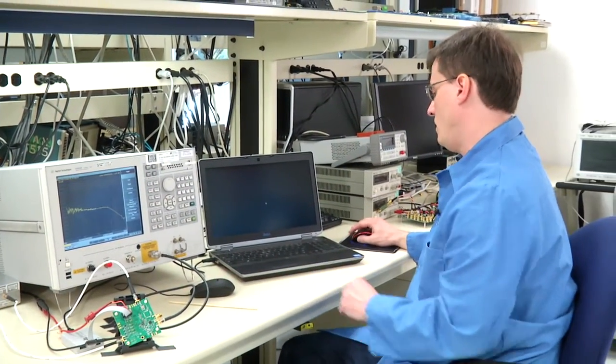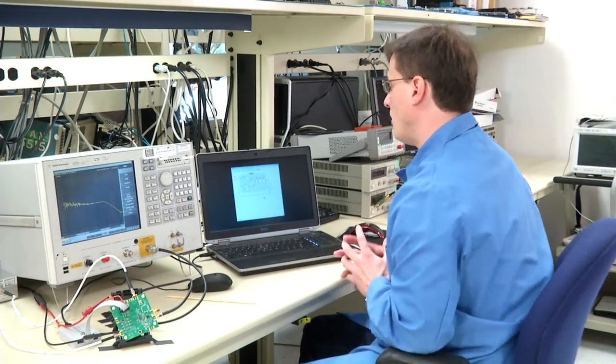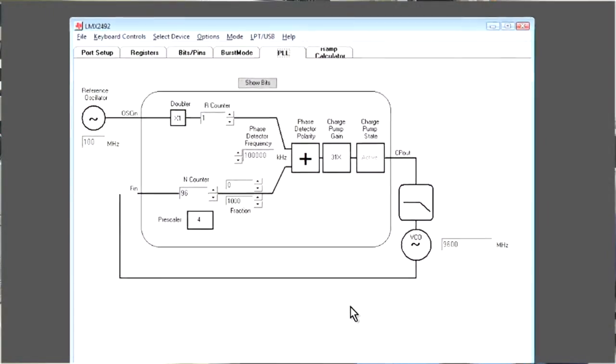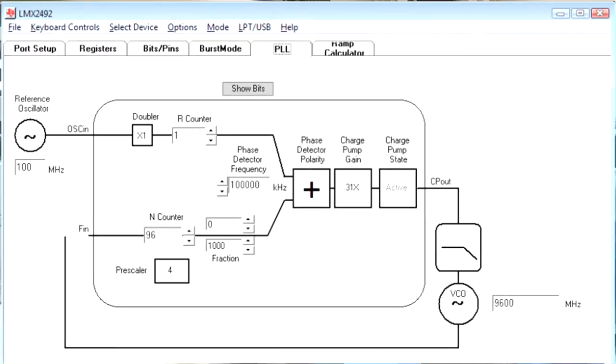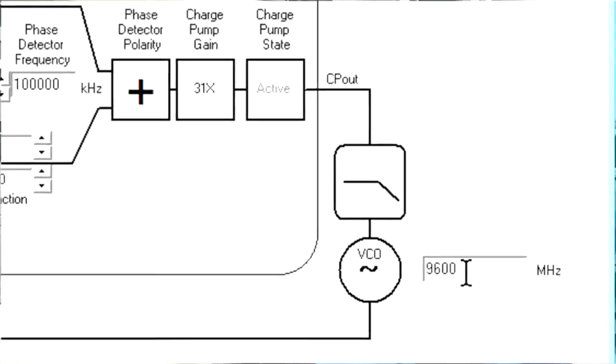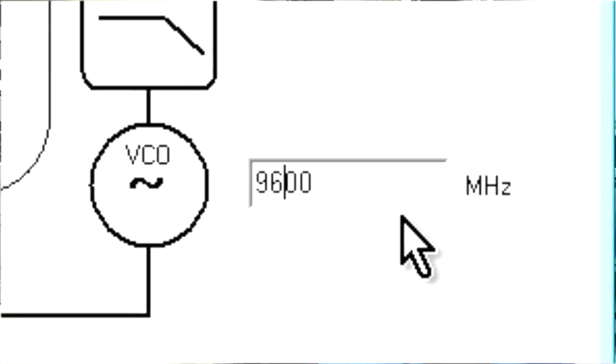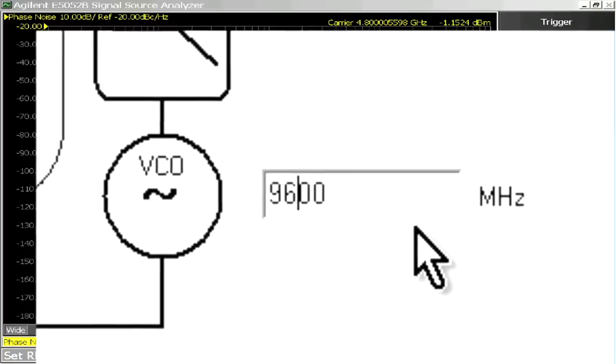Let's move to the software that is controlling the part through the serial interface. The software is called CodeLoader and is currently operating the part. The specified operating frequency is 9.6 GHz, but we can change that as well as all the other features of the part: charge pump, fractional, input divider, feedback divider as desired.